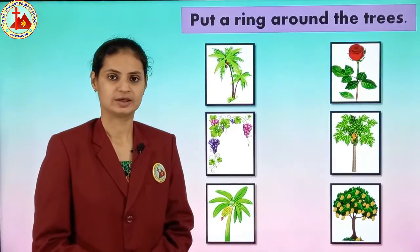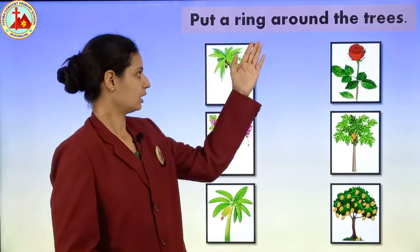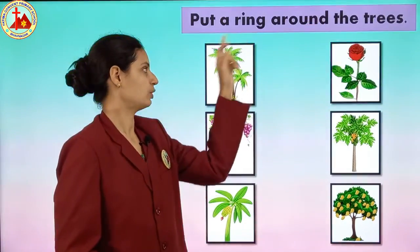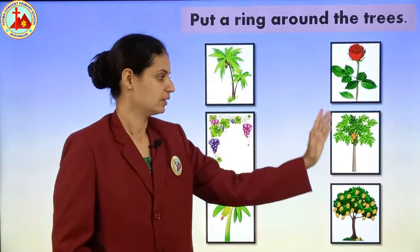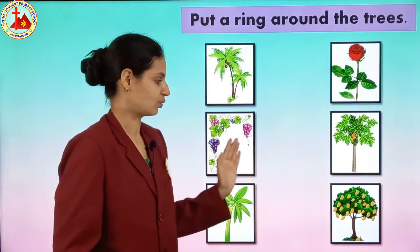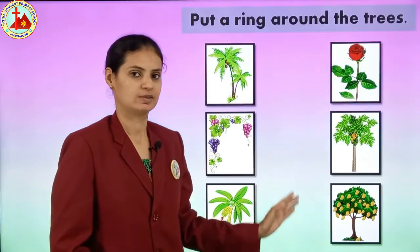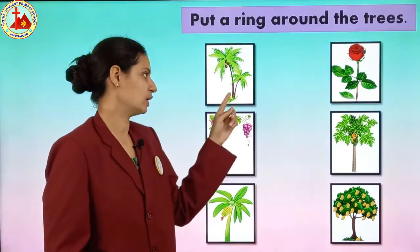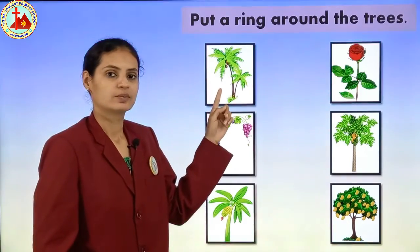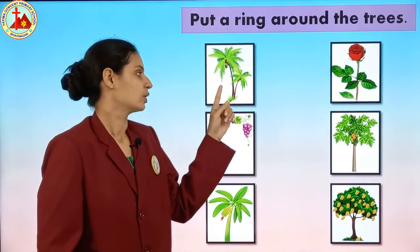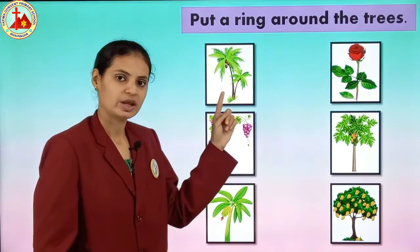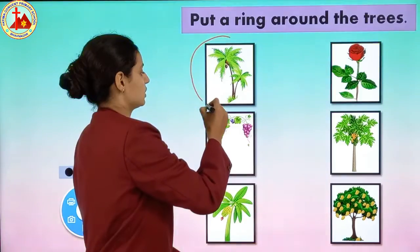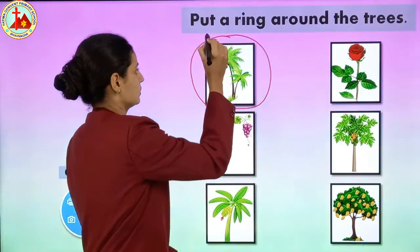Now in this question we have to put a ring around the trees. Put a ring means you have to put a circle around the trees. You have to identify the pictures which are pictures of trees and put a circle on those. See the first picture — this is coconut tree. Is it a tree? Yes. So we will put a circle on this picture. This is a tree.